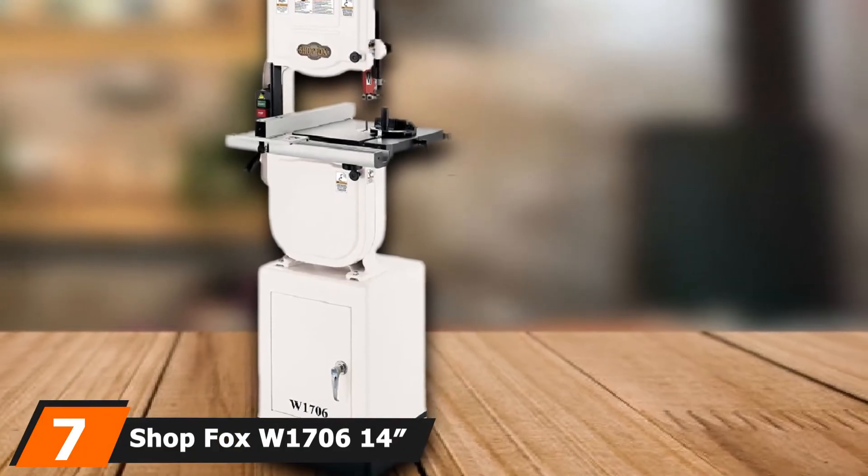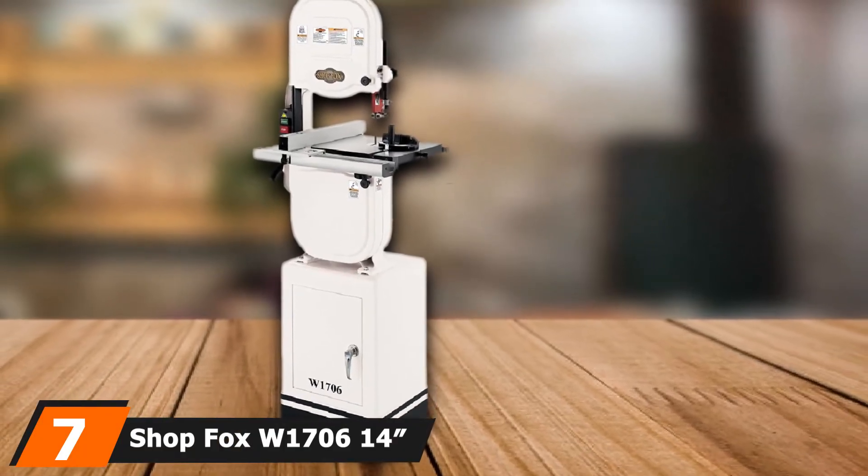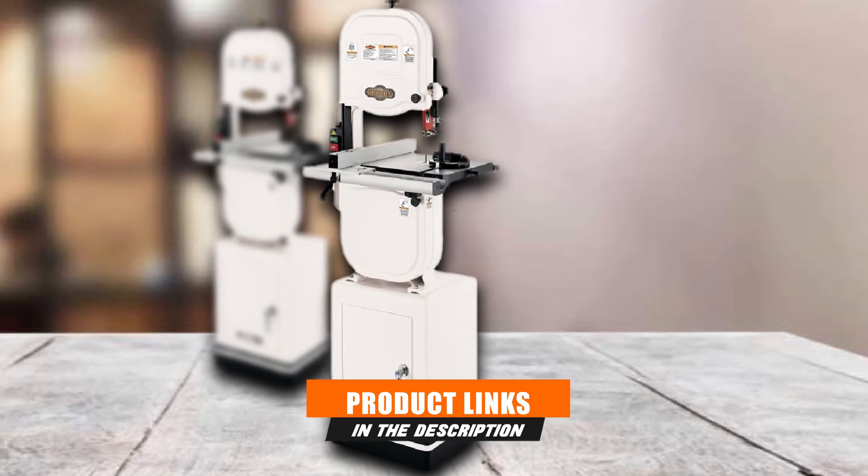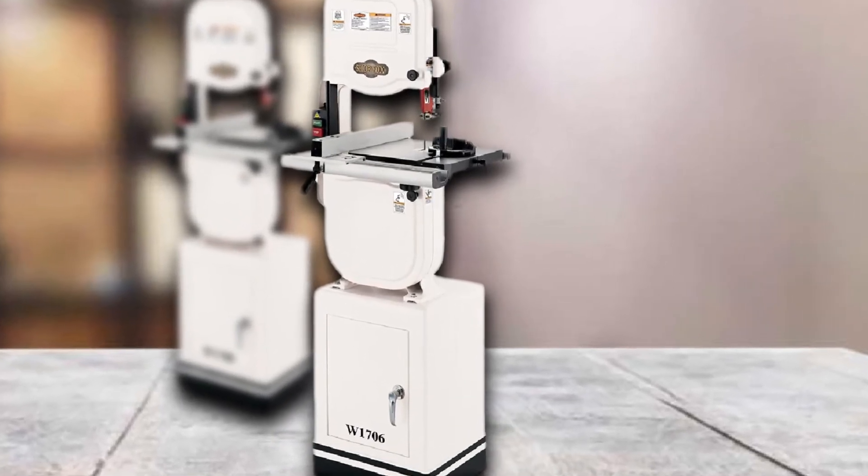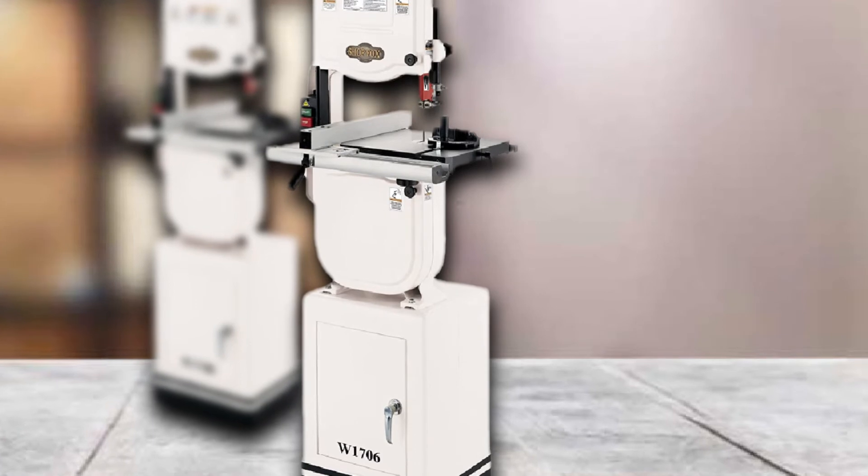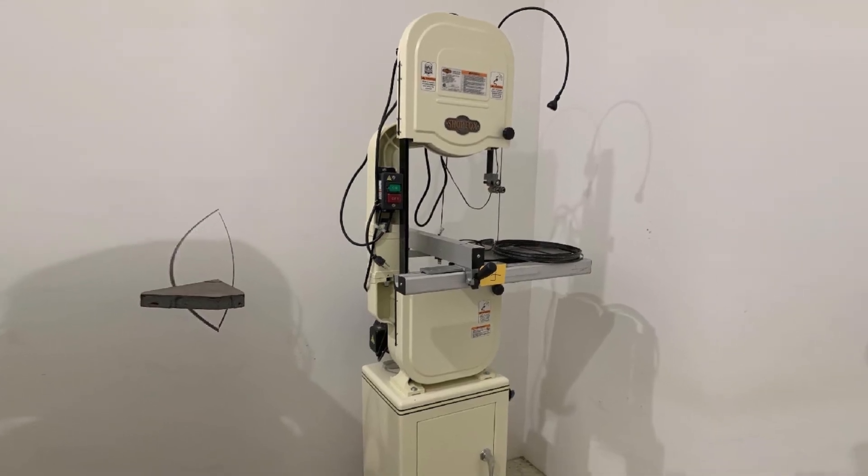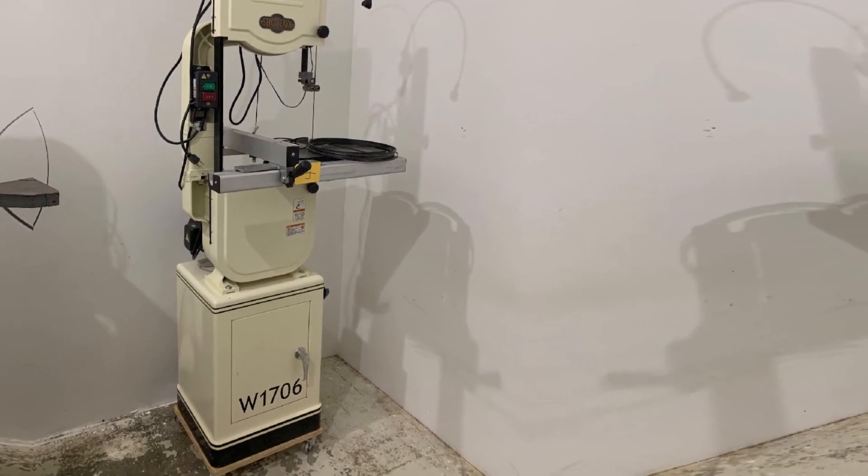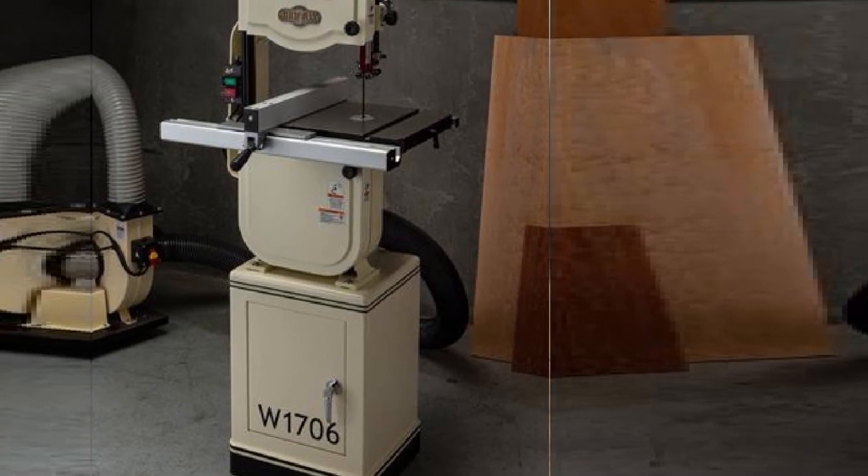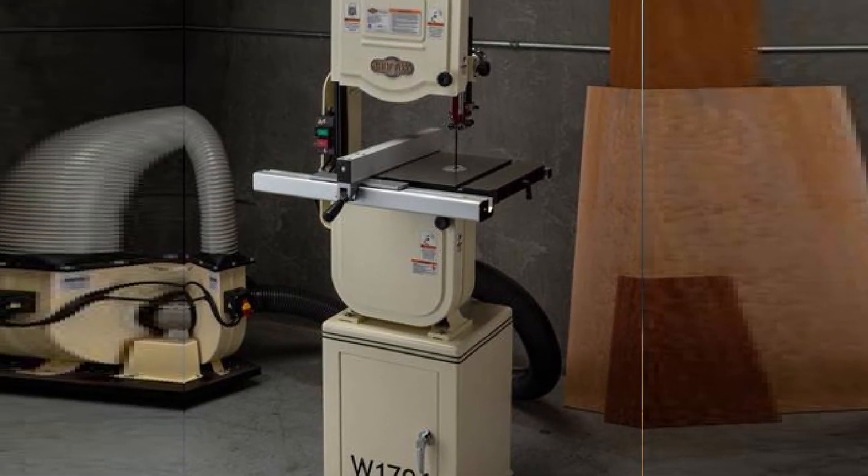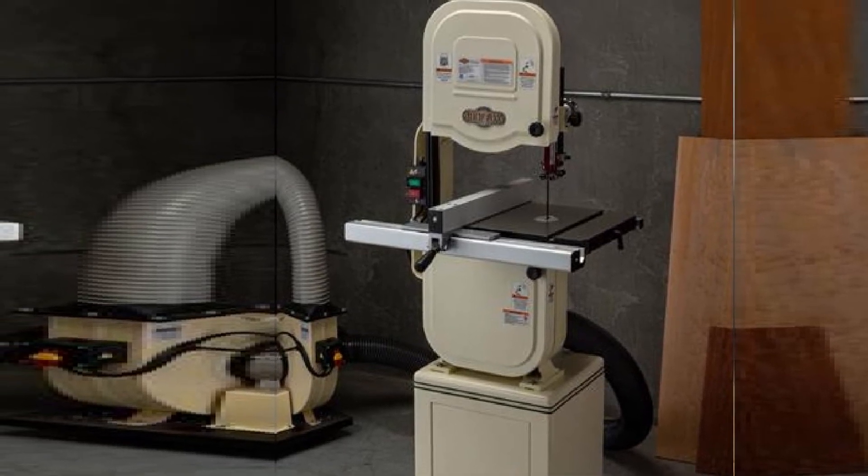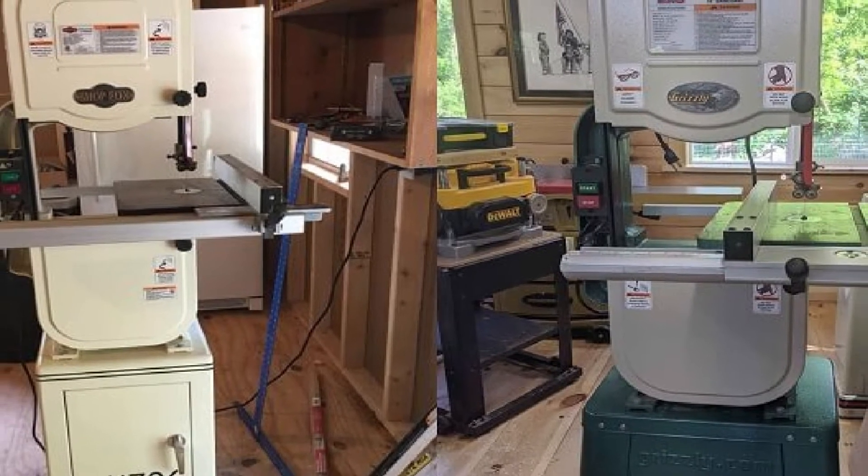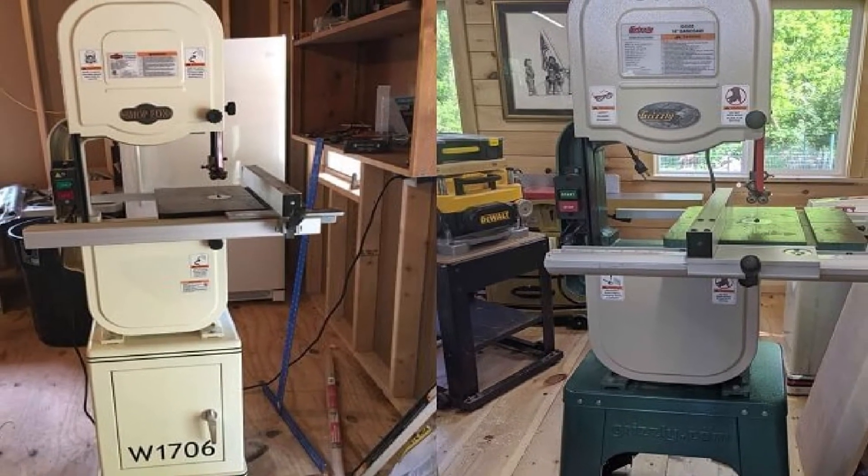Moving on to the next, at number 7 we have Shop Fox W1706 14 bandsaw. It deserves its place as the best woodworking bandsaw that you can buy today because it comes with so many amazing features. It's a freestanding bandsaw with great features such as one horsepower motor with the ability to cut at 1,725 RPM. Additionally, this machine comes with a 93-1/2-inch blade as well as a 14-inch square table. The cutting height is only 6 inches, which is not very good enough. However, you can boost it to up to 12 inches using an extra extension kit. If you are looking for a tool that will perfectly fit into your shop, even if it is small, then you need to go for this machine.